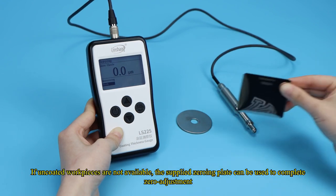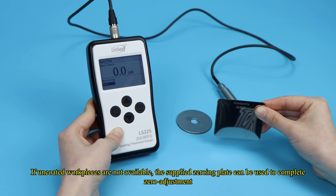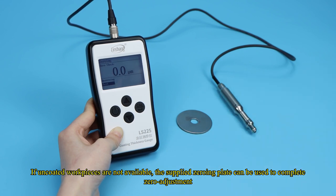If uncoated workpieces are not available, the supplied zeroing plate can be used to complete zero adjustment.